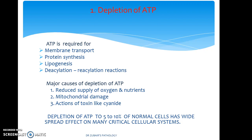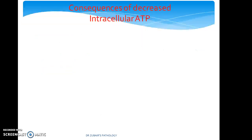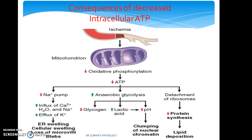Depletion of ATP in as many as 5–10% of normal cells has widespread effects on many critical cellular systems. When there is decreased production of ATP — meaning injury to the mitochondria resulting from ischemia — there is a failure of the sodium pump, leading to influx of calcium, H2O and sodium, and efflux of potassium, resulting in certain morphological changes.